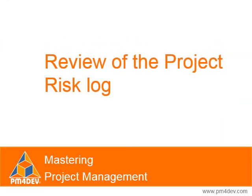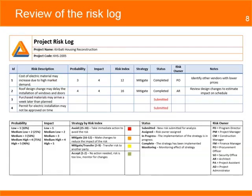You decide to review the project risk log. This is a standard log that contains information to help prioritize risk and identify the budget contingency reserve. The team is familiar with the process, and last time it was used the team did a good job in identifying, analyzing, and quantifying risk.